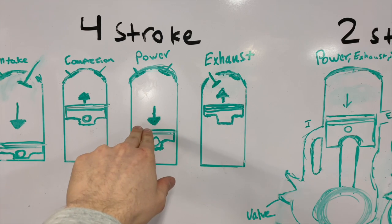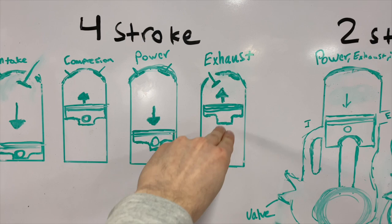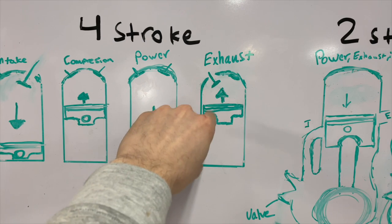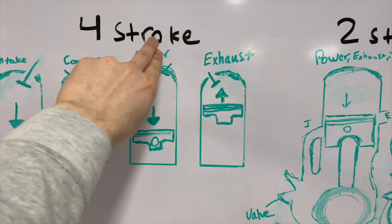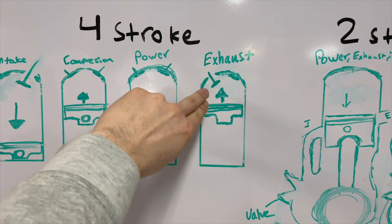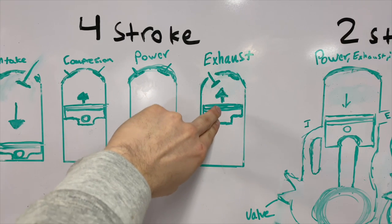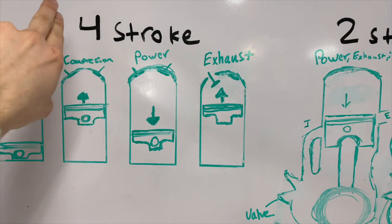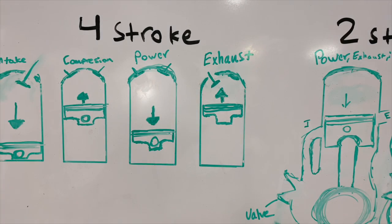Now that we have all these hot gases from our power stroke, we need to relieve them from the cylinder. We open the exhaust valve and the piston travels upwards, pushing all those gases out through the exhaust valve.